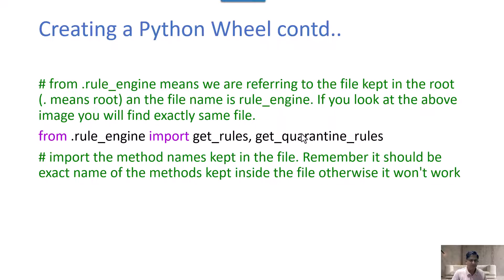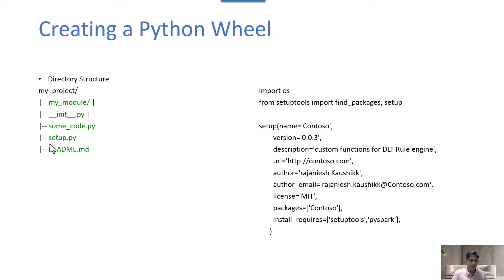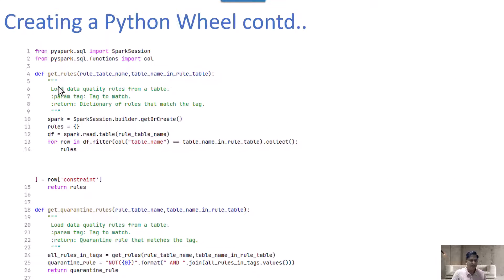Let's understand what to keep inside the Python wheel code. In this example, some_code.py contains two methods: get_rules and get_quarantine_rules — these are the methods to be called from the Databricks environment. The code imports PySpark session, columns, and SQL functions. Most importantly, it uses SparkSession.builder.getOrCreate(), which will either access an already-created Spark session or create a new one.